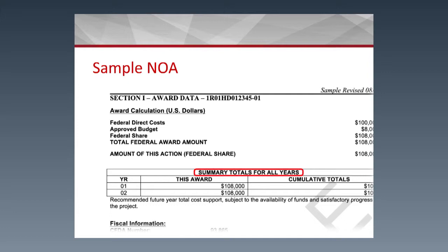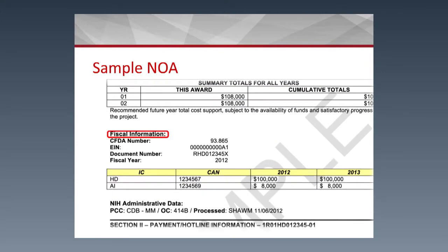Section 1 also includes future year funding totals and the fiscal information, which is extremely important for the institution. This includes the CFDA number — Catalog of Federal Domestic Assistance — which is a number the federal government uses to identify what type of research is being funded.